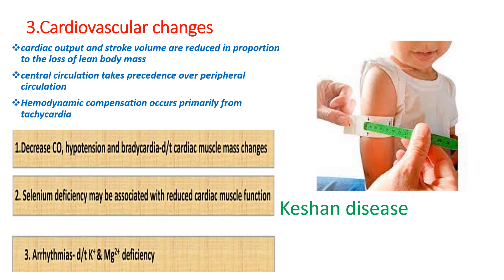Selenium deficiency is common due to nutritional deficiency of selenium in the malnutrition state. This causes cardiomyopathy due to selenium deficiency, which is called Keshan disease. Arrhythmia is common due to electrolyte disturbance in malnutrition. There is hypokalemia and hypomagnesemia during malnutrition, which causes predisposition to arrhythmias.